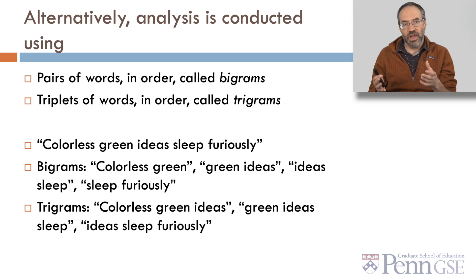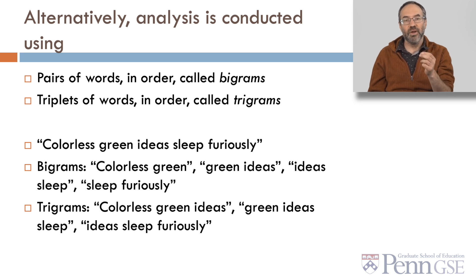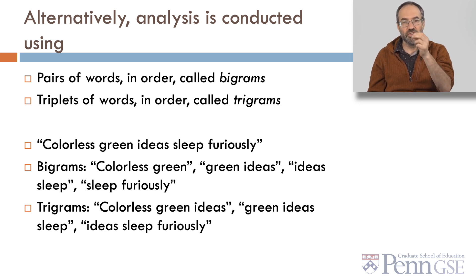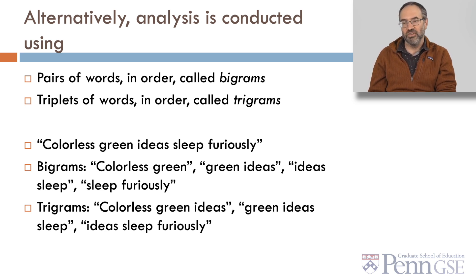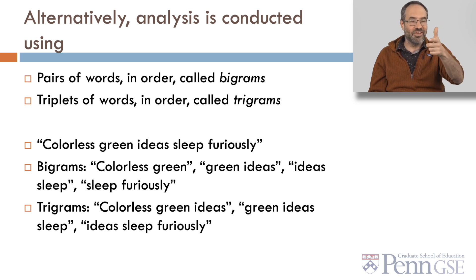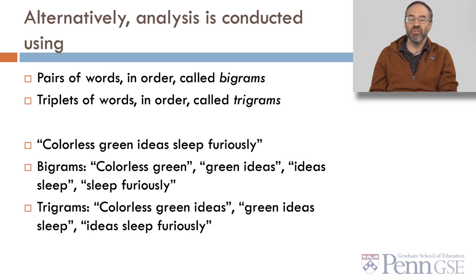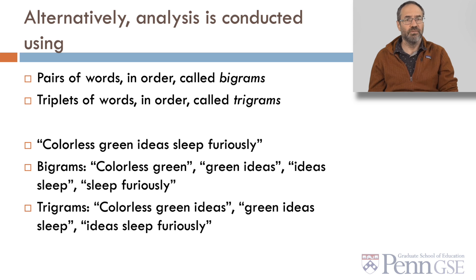For example, in the classic sentence 'colorless green ideas sleep furiously,' the bigrams would be: colorless green, green ideas, ideas sleep, sleep furiously. It's impressive that every single pair of words in this sentence doesn't really make sense — this was actually intentional in the creation of the sentence, famously by Noam Chomsky.